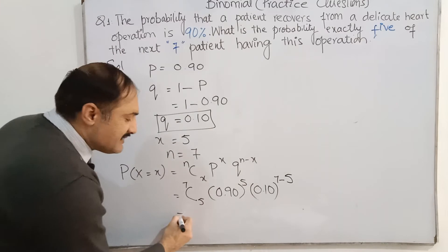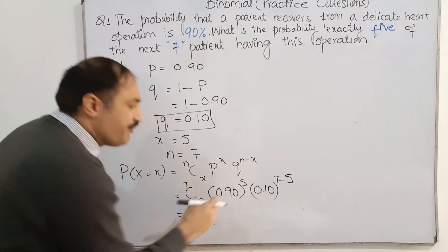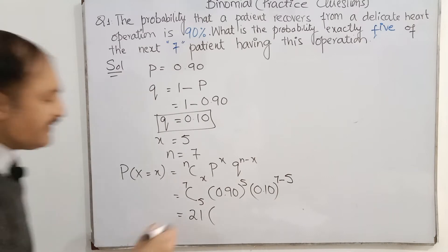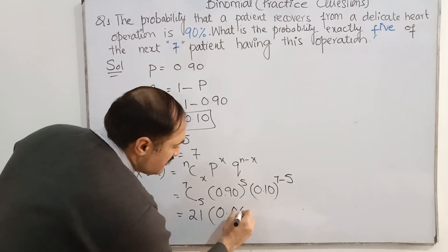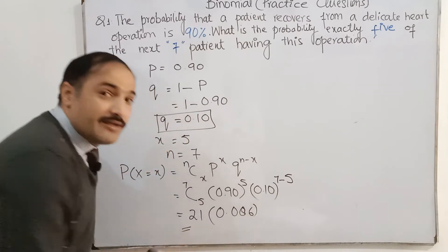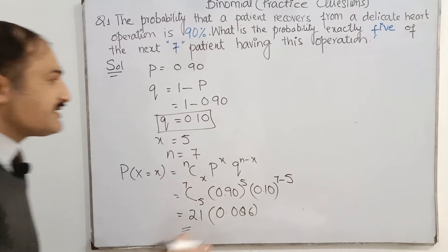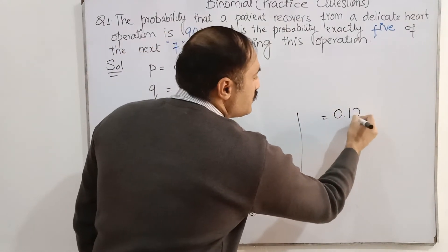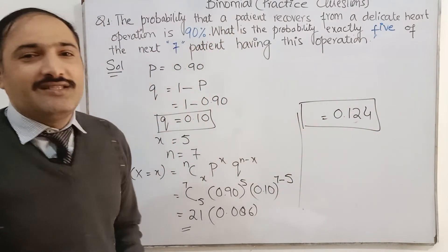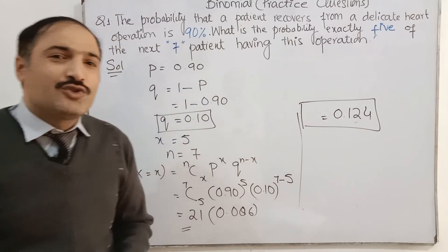So here is, 7C5 is 21. If we put these two values on the calculator, the value of this one is 0.006. Here, you can write this on the calculator, 21 multiply by 0.006. It's 0.124 is the answer of the binomial distribution. Okay, dear students, I hope that you will understand this. Thank you so much.